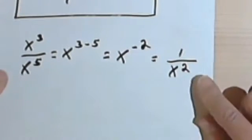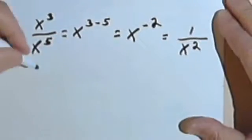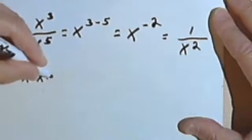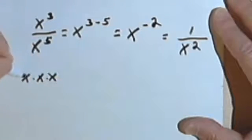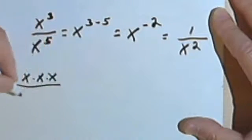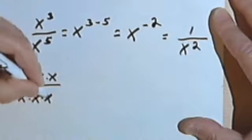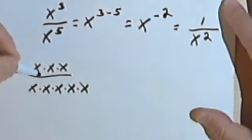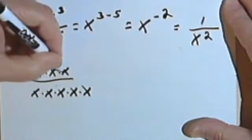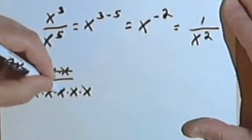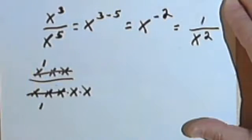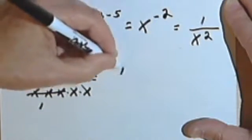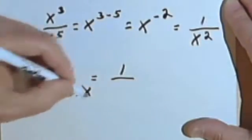Another way to see how this comes about would be if we actually write out x to the third over x to the fifth as x times x times x. There's my x to the third. And the denominator, x to the fifth, is 5 x's. And then we decide to simplify this fraction by eliminating 3 of the x's in the numerator and 3 of the x's in the denominator. So now what we've got is 1 over x times x, which is x squared.